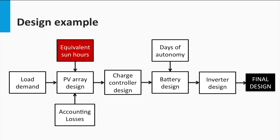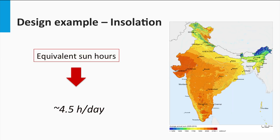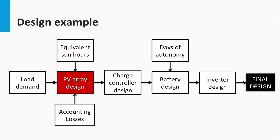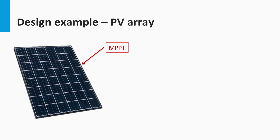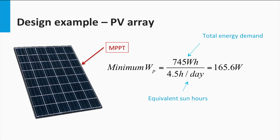The next thing we have to consider is the equivalent sun hours, which will depend on the irradiance that the chosen location enjoys. In this example, suppose the place is in a location within India and enjoys an average of 4.5 equivalent sun hours. Knowing the load demanded at the PV output and the equivalent sun hours, we must estimate the rated PV power required. A particular PV panel has electrical parameters as shown and is rated at 100 Wp. Assuming the panel is operated at its maximum power point, we can calculate the minimum PV power required by dividing the total energy demand at the PV output by the equivalent sun hours. This gives us a power of 165.6 W.